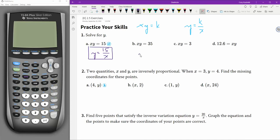And if this one is y equals 35 over x. Divide both sides by x, and that's what you get. Divide both sides by x here, you get y equals 3 over x. And divide both sides by x here, and you'll get 12.6 over x.